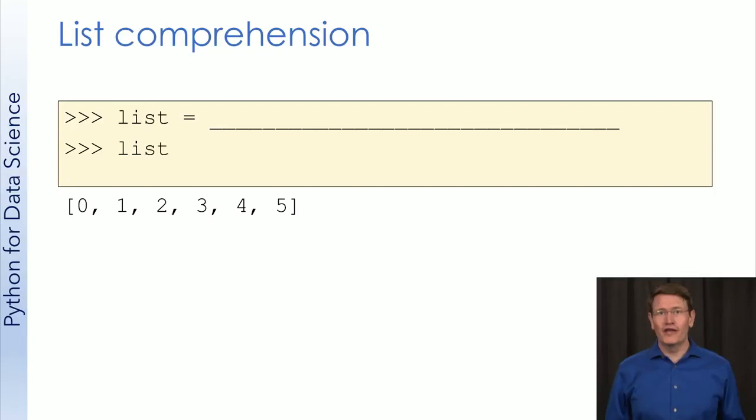OK, your turn now. Let's start by just making a list with the values 0 through 5. Stop the video, think about what belongs here, try to write it down or test it out, and then resume.